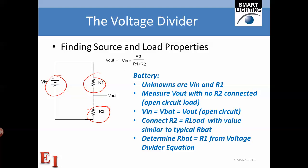In this case the unknowns are Vin and R1. What we want to do is measure Vout with no load connected — that is the open circuit condition.